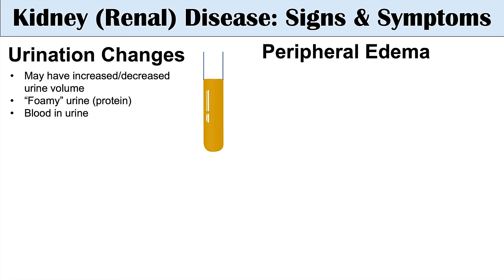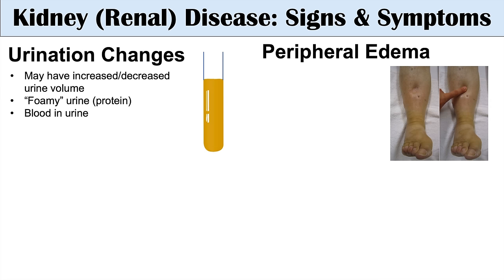The next sign is peripheral edema. This is pitting edema — you can see there's a lot of interstitial fluid in the tissues where it's not supposed to be. If you push your finger on that area and release, you can see this pitting. This is caused by fluid or volume overload due to advanced kidney disease, where an individual is not urinating enough volume off, leading to more fluid in their interstitial areas, often in the lower limbs.